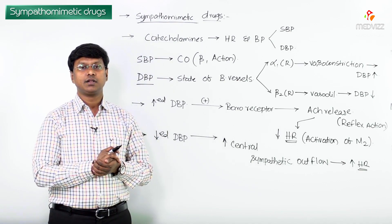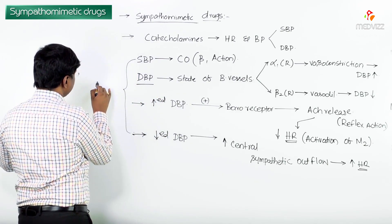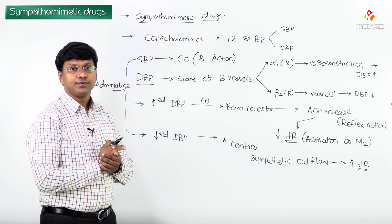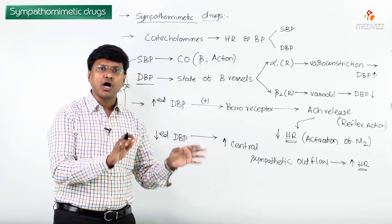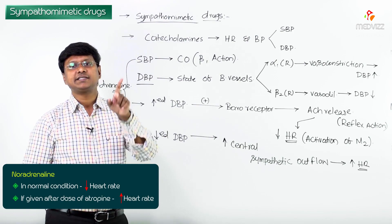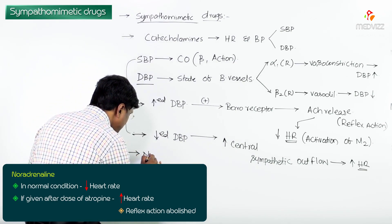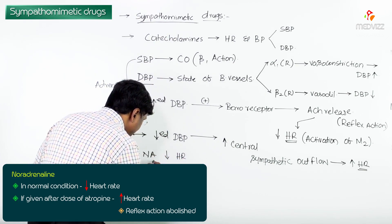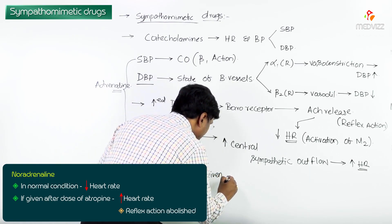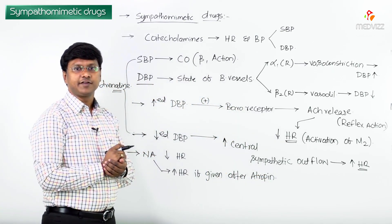Now let me discuss noradrenaline — remember this is the action of adrenaline on blood pressure and heart rate. Noradrenaline normally decreases the heart rate. But if it is given after a dose of atropine, it increases the heart rate, because the reflex action is abolished by atropine.